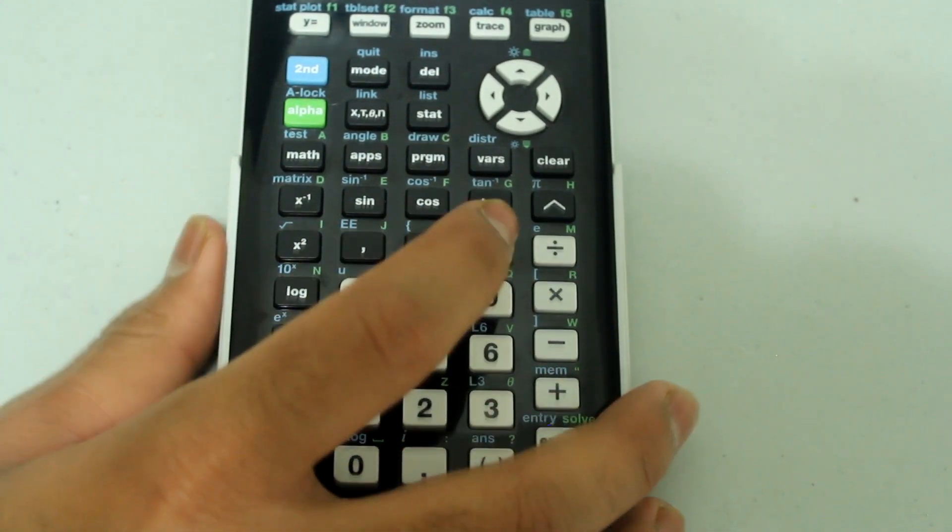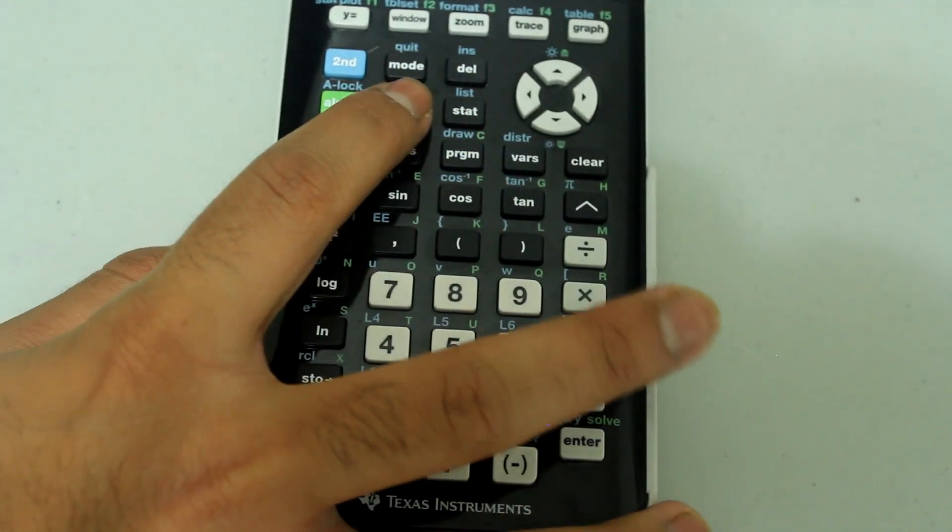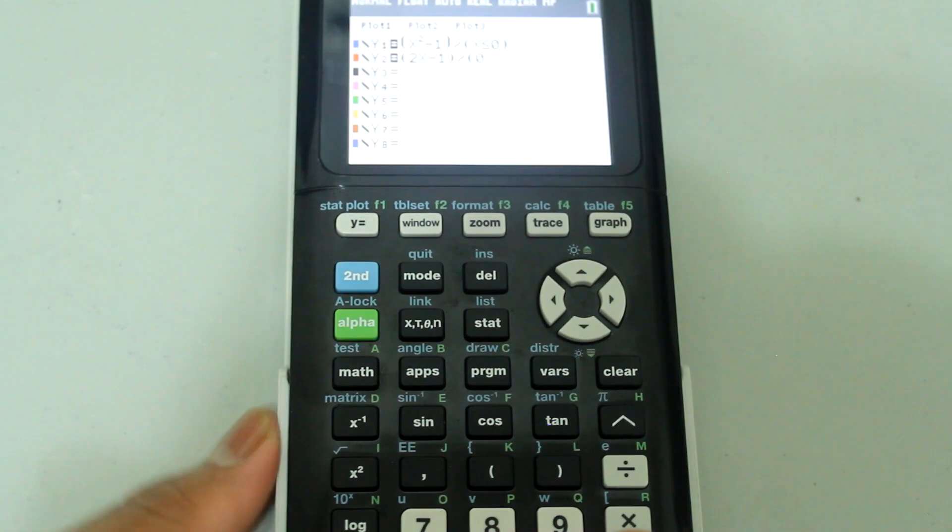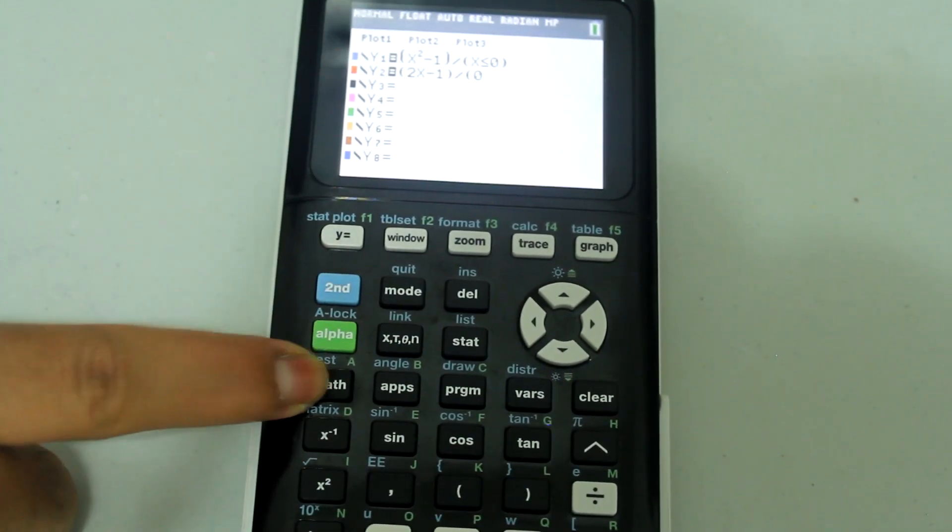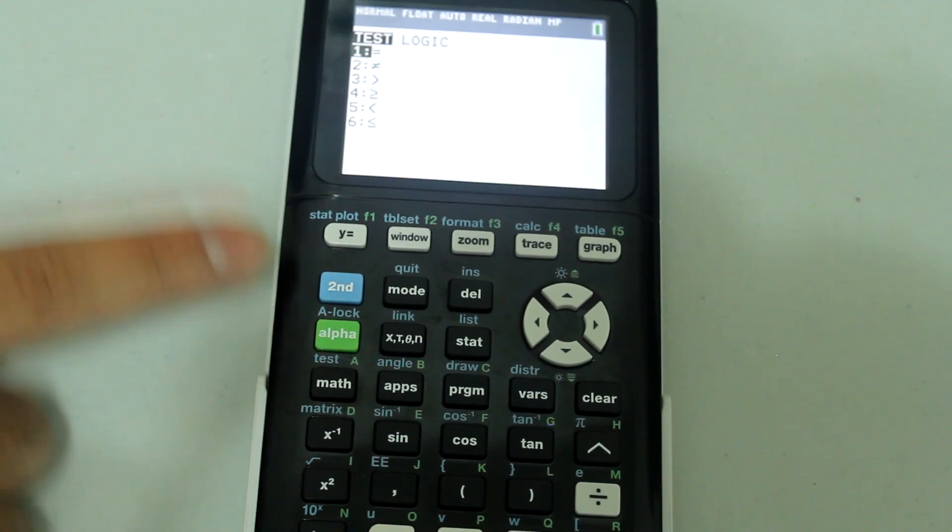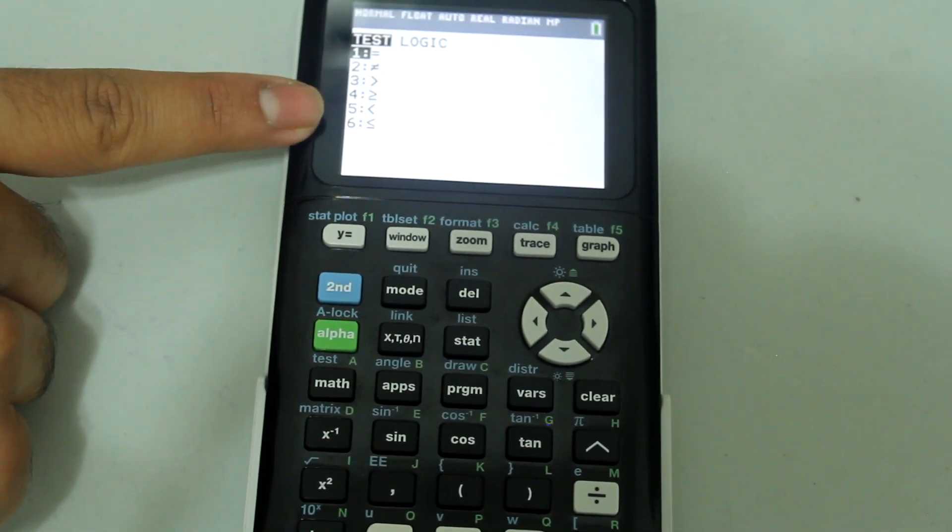Open another parenthesis so it looks like this now. And we're going to type in 0 and then press 2nd math.